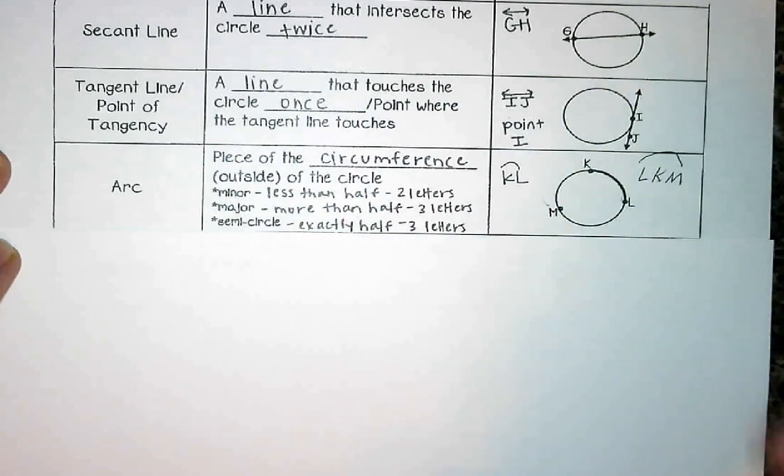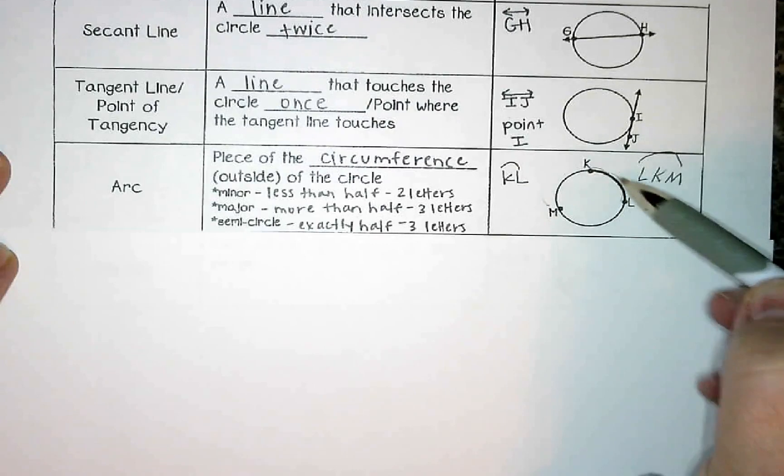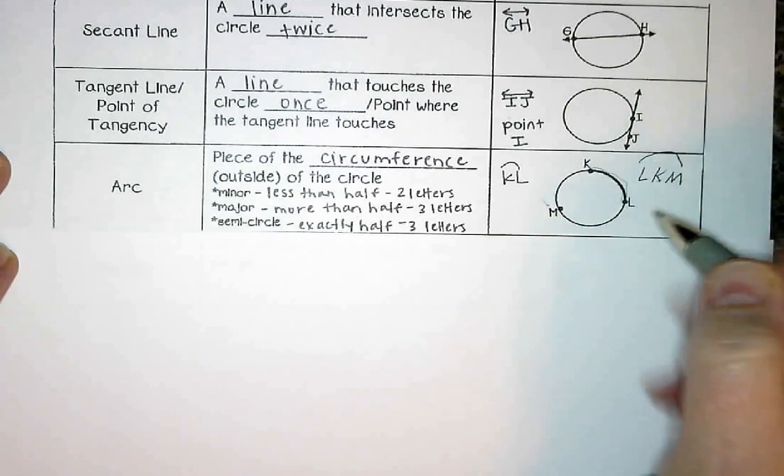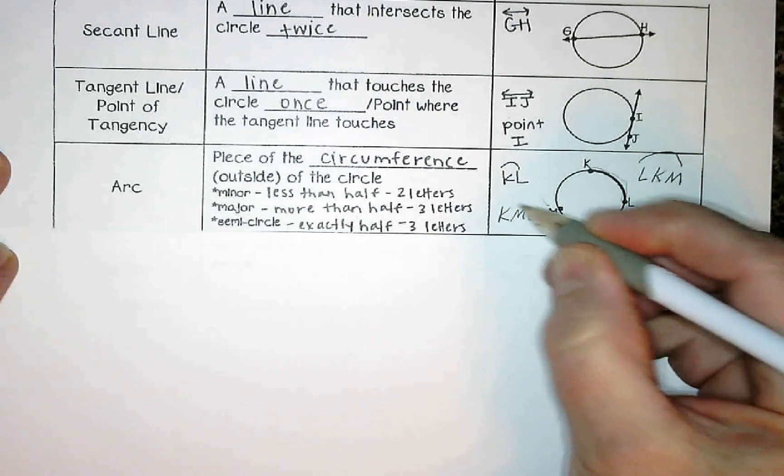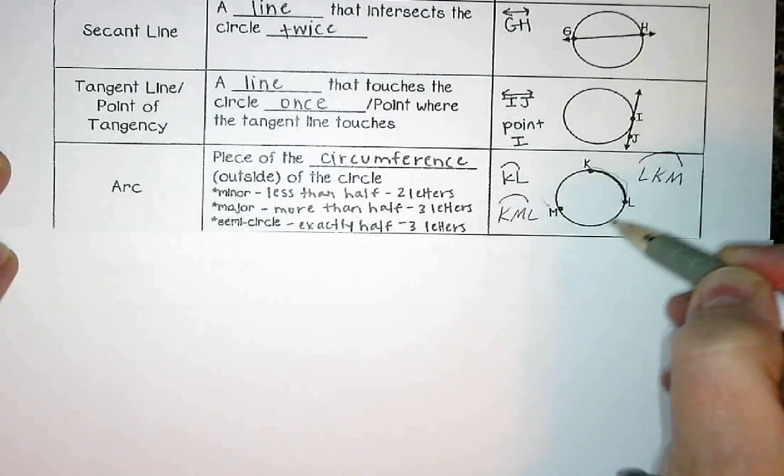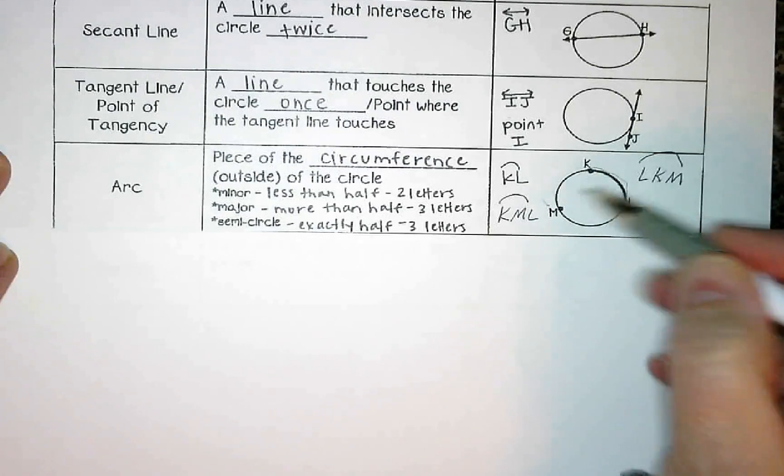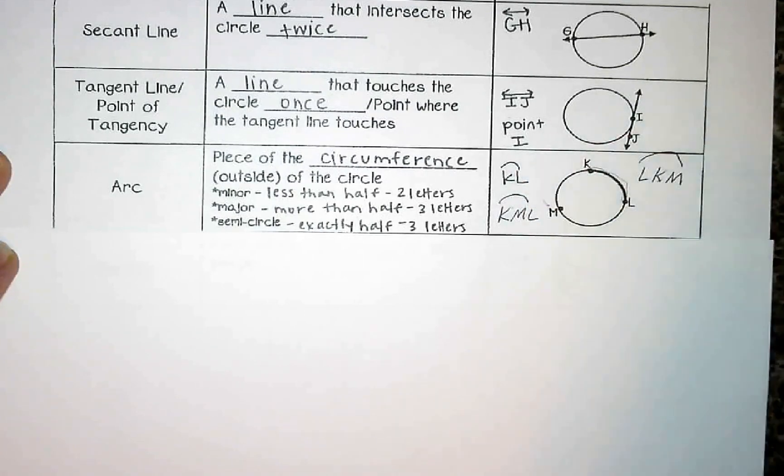This just helps you determine which way around the circle that you're going to go. Because if I said KL, that would go from here to here. If I said KML, that would go K through M and stop at L. Those obviously have two different measurements to them. So the way that we label and name them will be important.